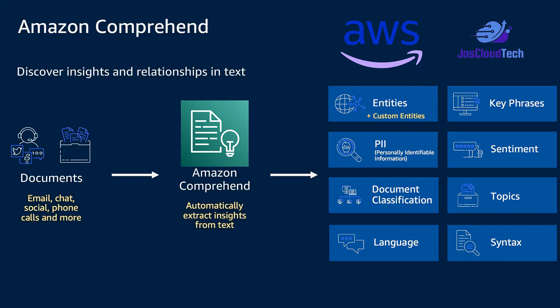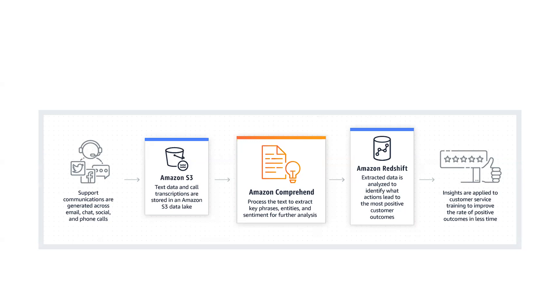You can integrate it with email, chat, social media, and phone calls, and you can have real-time analysis or a scheduled job. Here's how it works: we can keep emails, chats, and phone calls in S3, then Comprehend along with Textract will extract and analyze those details. The output can go into Redshift or another S3 bucket as JSON, or we can make REST API calls.